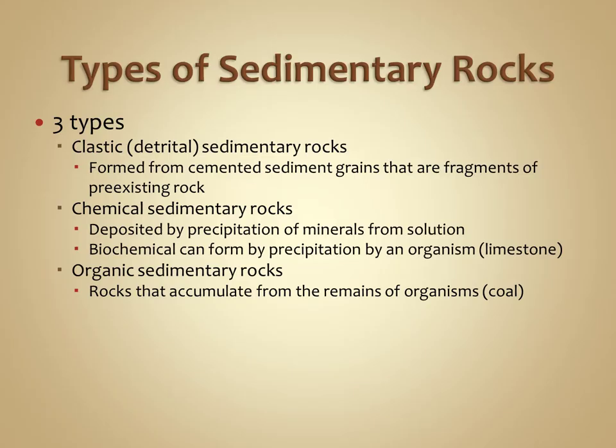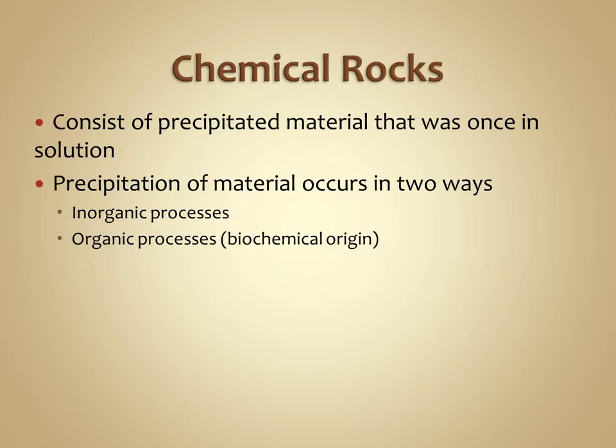Sedimentary rocks. In this mini-lecture, we will focus on chemical sedimentary rocks and organic sedimentary rocks. Chemical sedimentary rocks consist of precipitated materials that were once in solution. This can occur either through an organic process or a biochemical origin, such as a marine organism precipitating calcite to form a shell, or through inorganic processes.